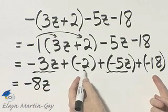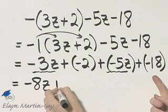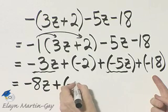These two are like terms. What is negative 2 plus negative 18? That would be negative 20.